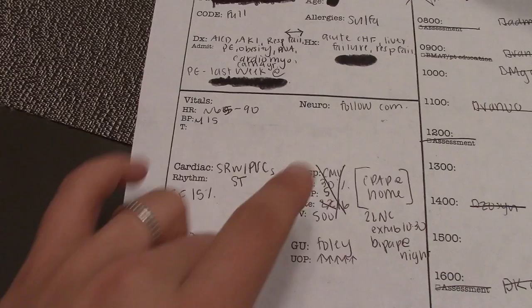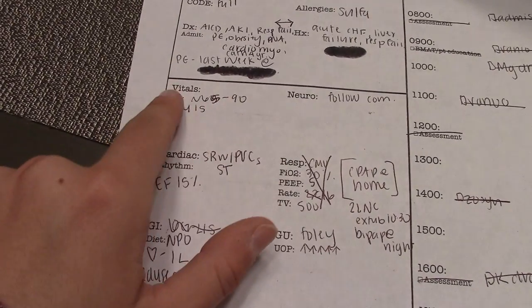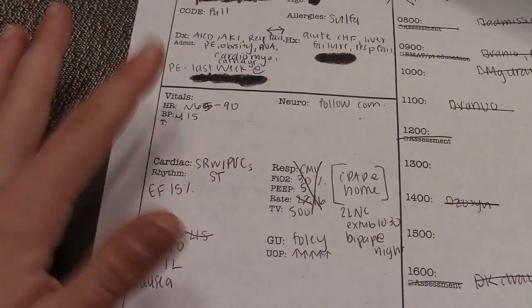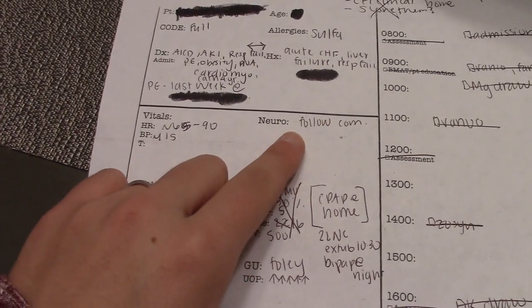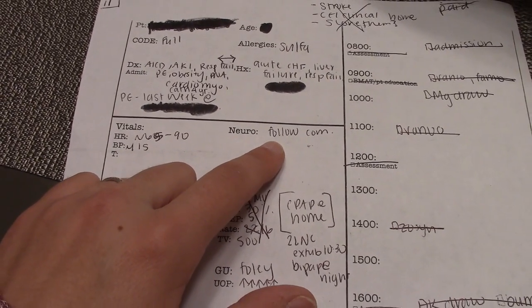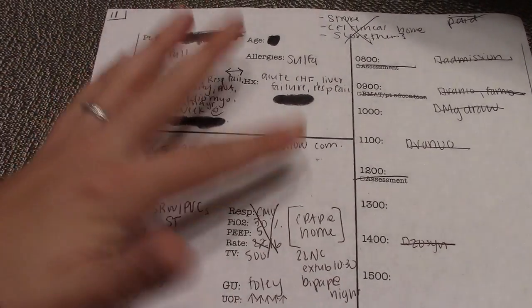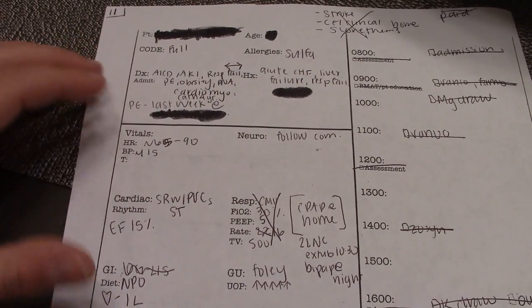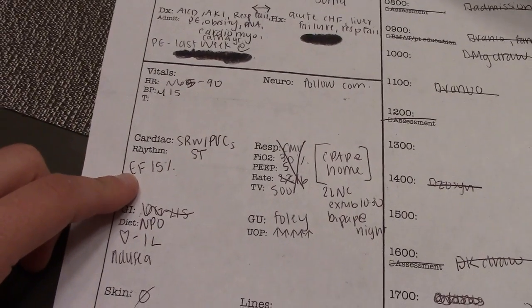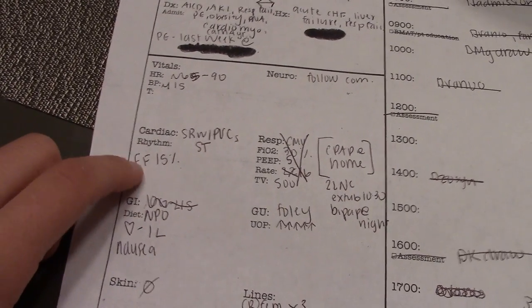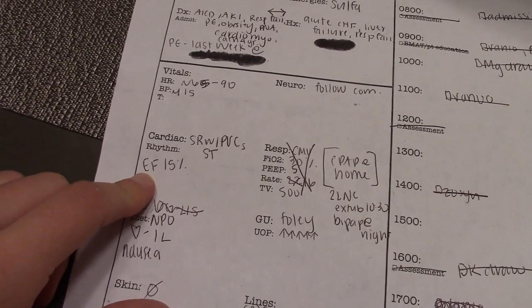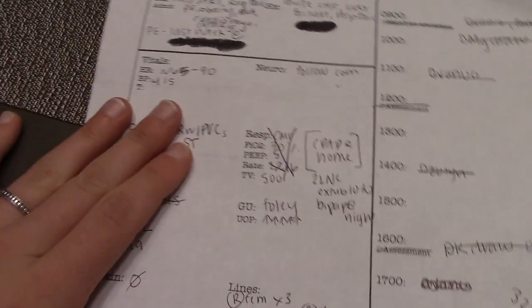Then I go down here and I have the patient's vitals, what they're trending, if they had a temp or any of those things. Neuro-wise, this can be more specific if they're a neuro patient, but this patient was completely alert and oriented, so I just put that they followed commands. Cardiac-wise, this was the cardiac rhythm. This was an old diagnostic test result from previous tests, and the ejection fraction was 15%, so I put that in the cardiac part.